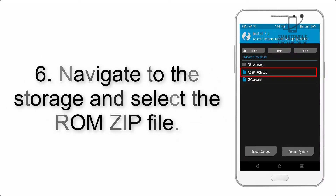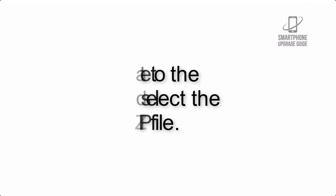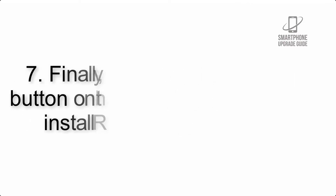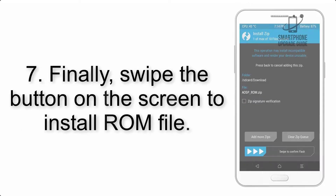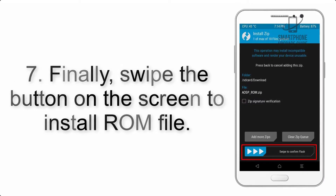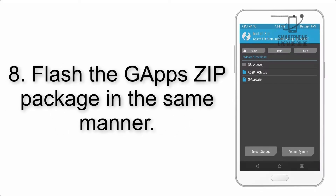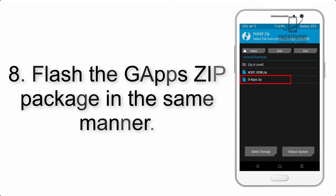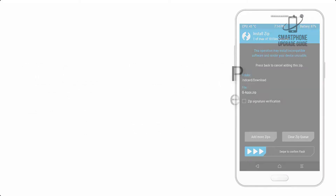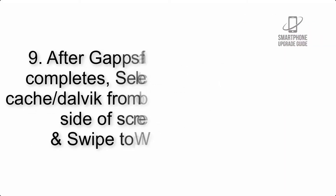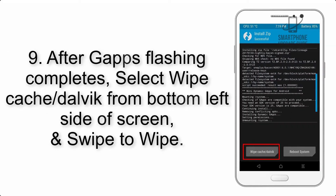Step 6: Navigate to the storage and select the ROM zip file. Step 7: Swipe the button on the screen to install the ROM file. Step 8: Flash the GApps zip package in the same manner.